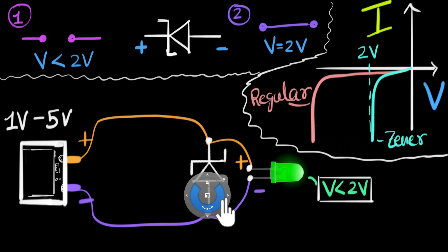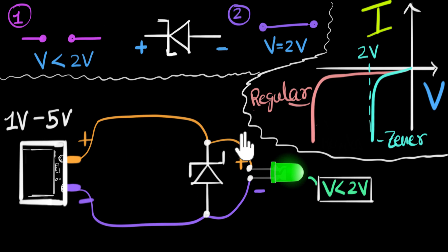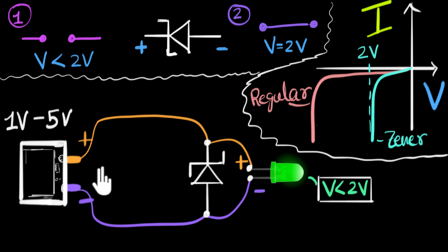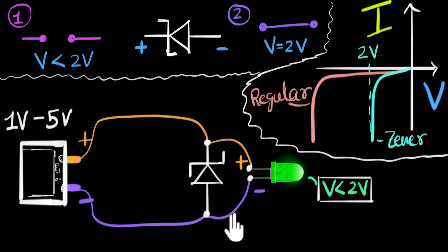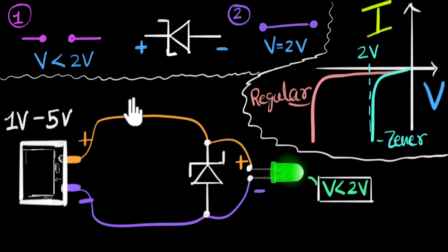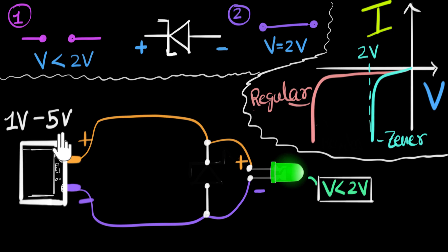There we have it! Now we know for sure that the voltage across this diode is not going to exceed two volts. Think about what will happen under various circumstances. If the supply voltage is less than two volts, our Zener diode acts like an open circuit, so the current flows directly through the LED, powering it up nicely. The LED will glow as long as the voltage is less than two volts.